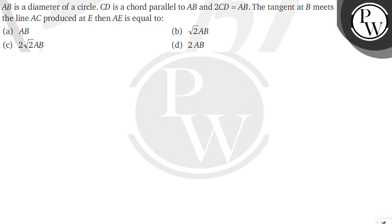Hello Bacho. The question is: AB is the diameter of a circle, CD is a chord parallel to AB and 2CD is equal to AB. The tangent at B meets the line AC produced at E, then AE is equal to.